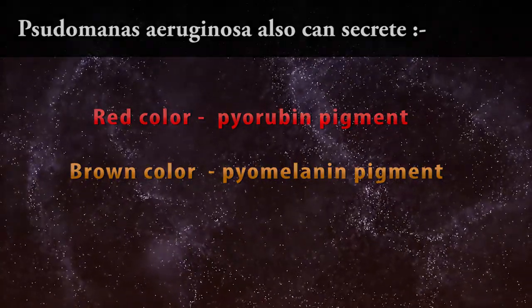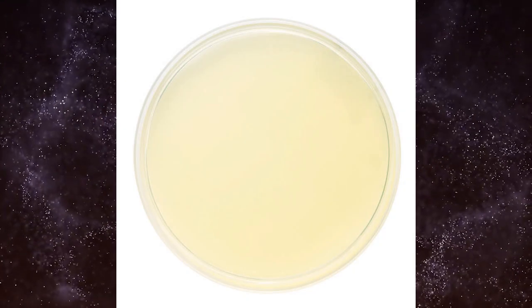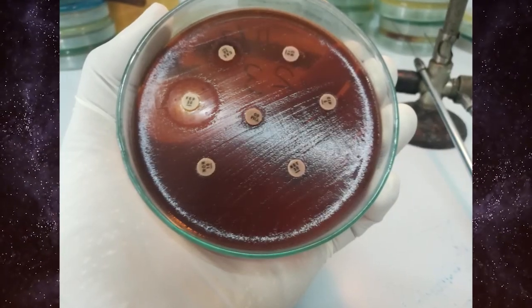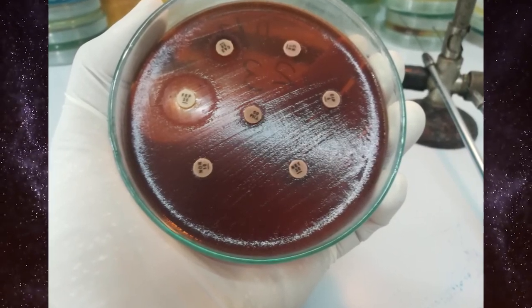So these pigments can convert yellowish Müller-Hinton-Agar plate to brown color. This is a good clue to further verify the organism in the plate.